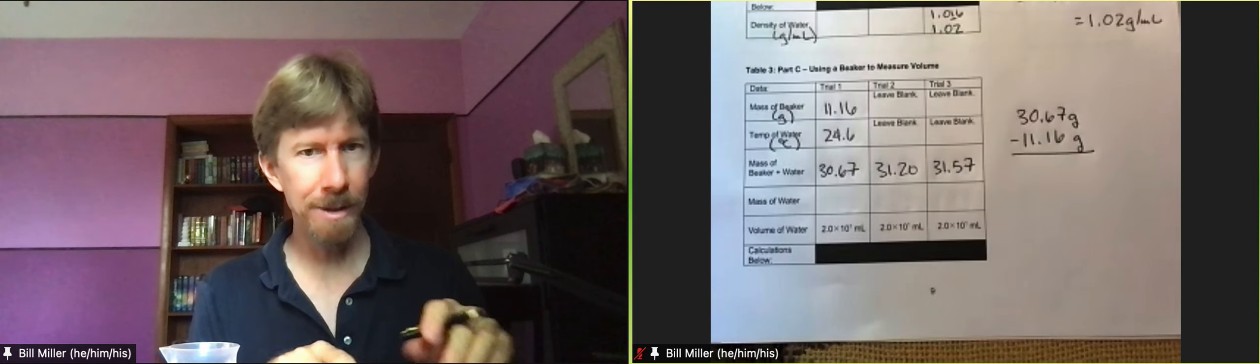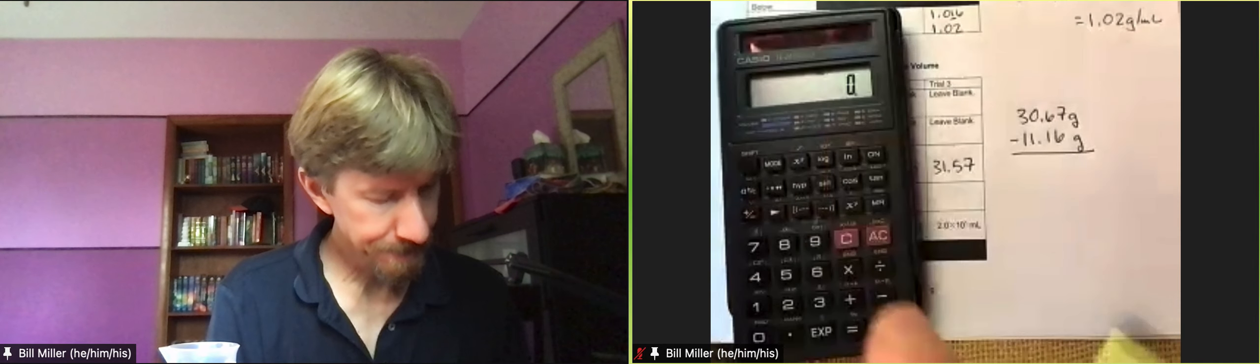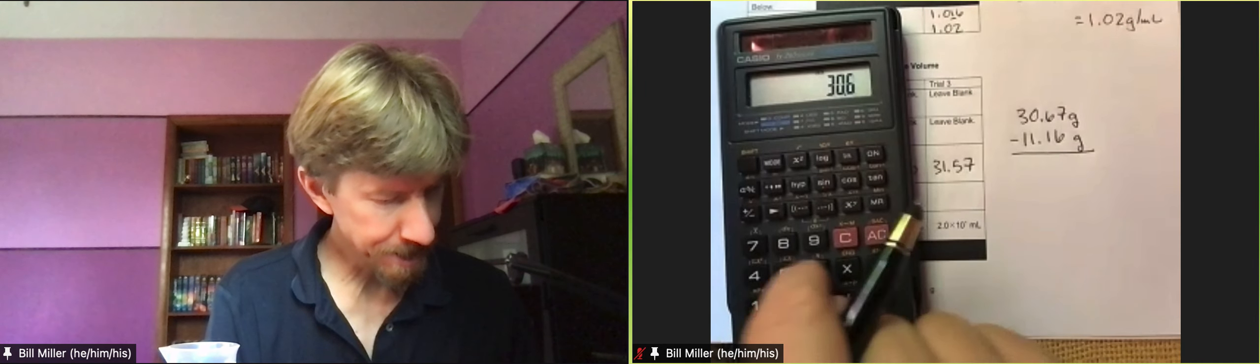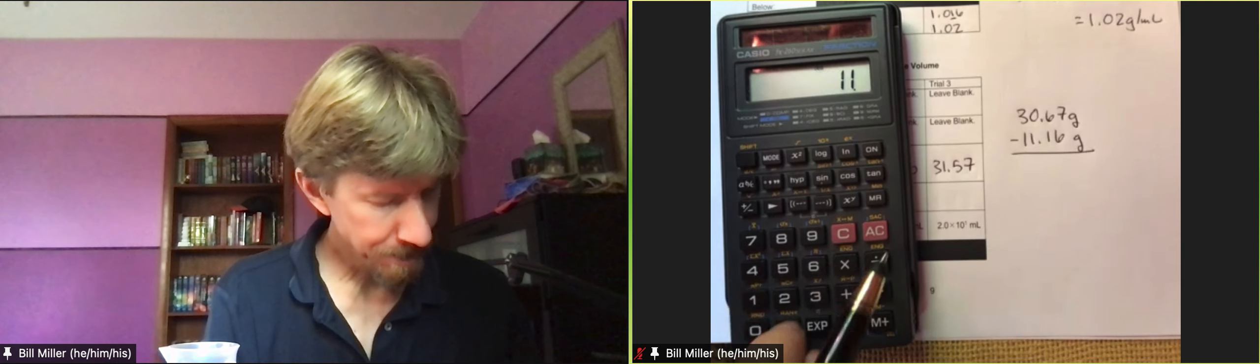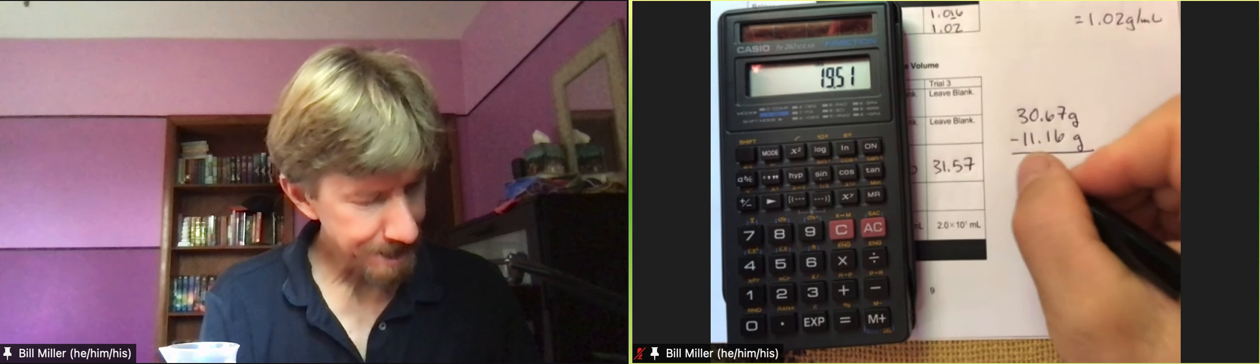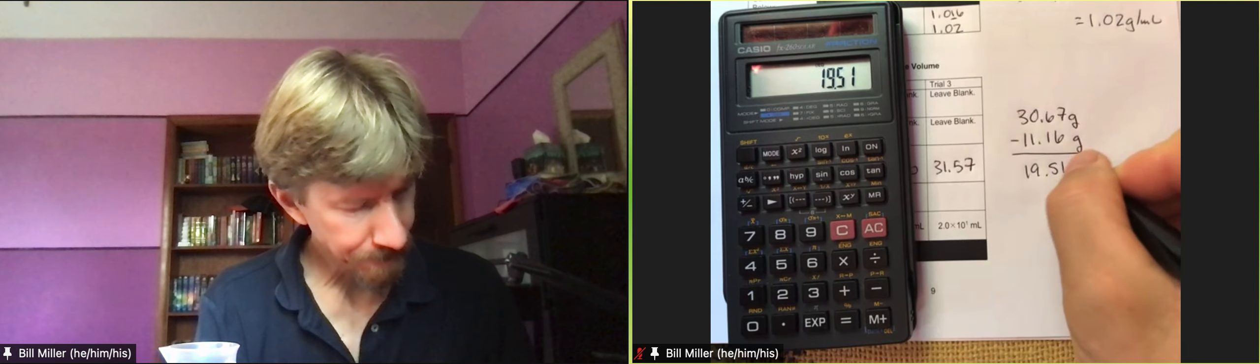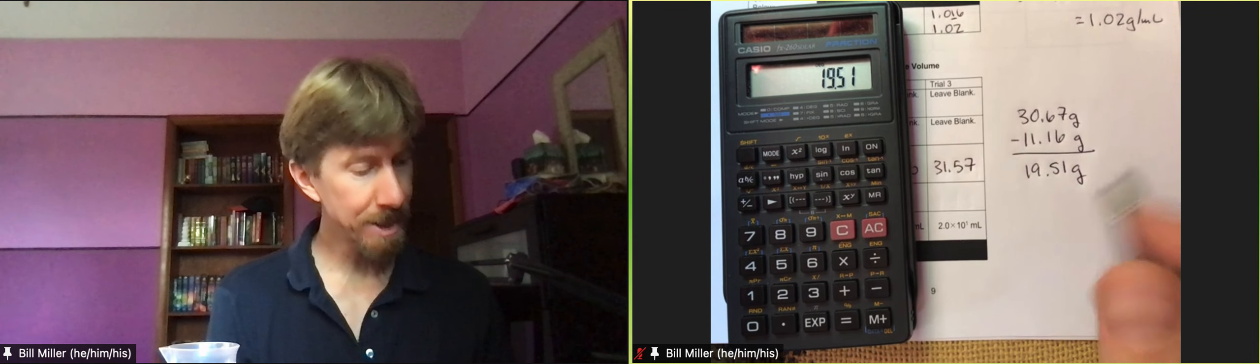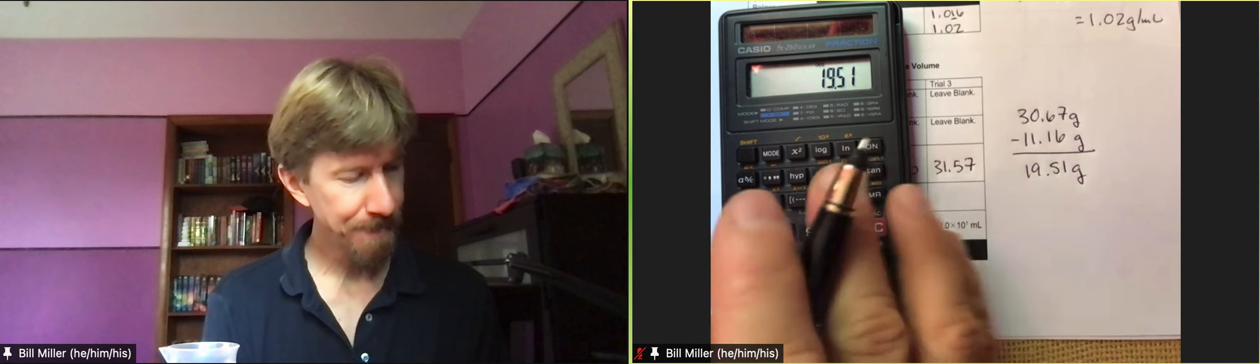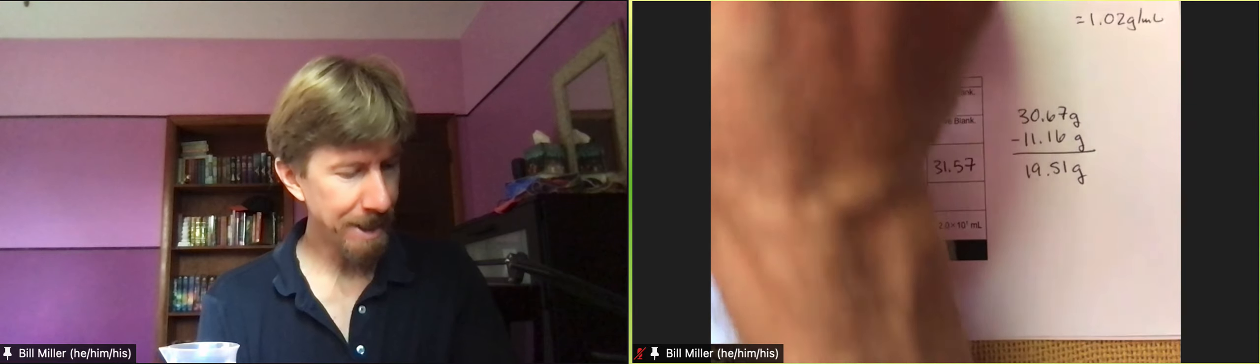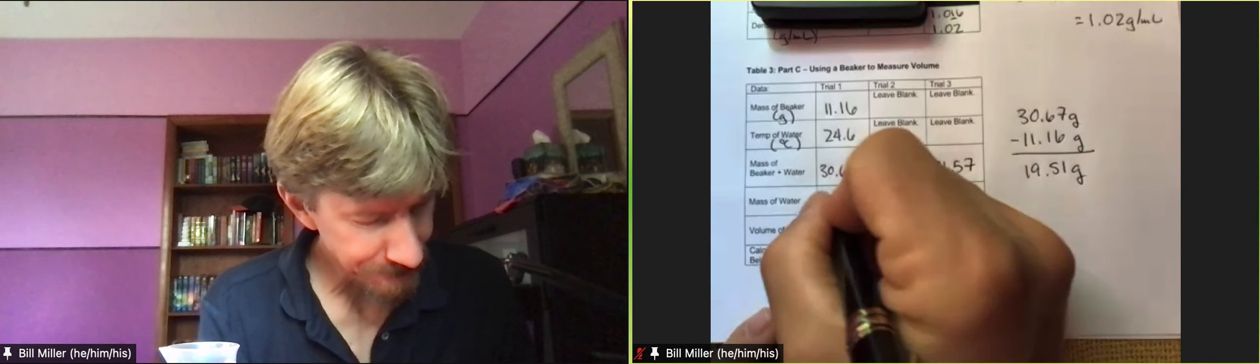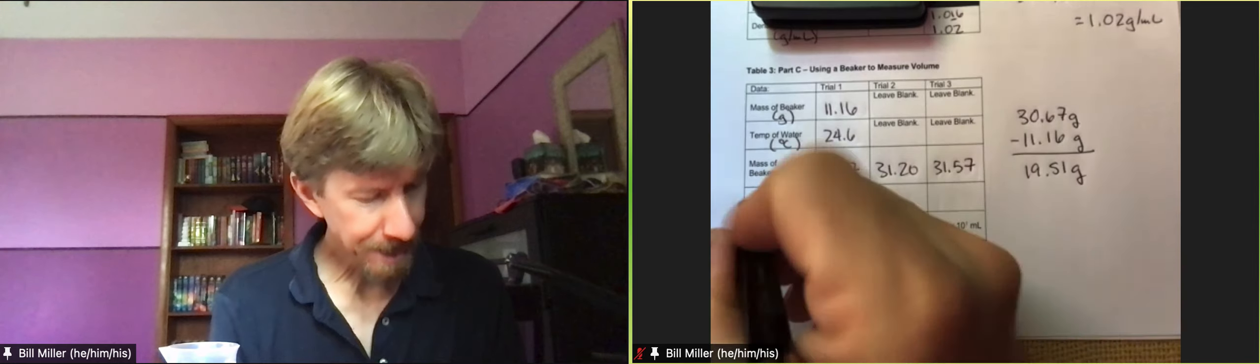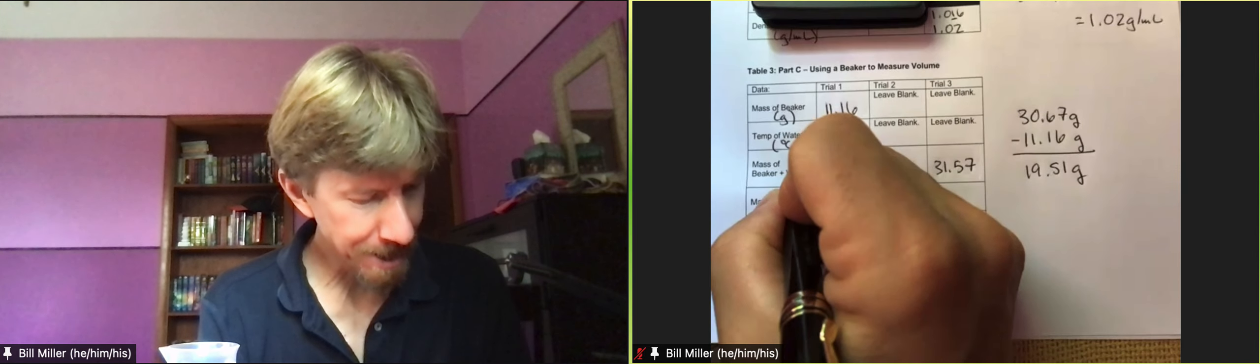Do the work on your calculator. 11.67. I get 19.51, which is 4 sig figs. Because that's true. And now my density. Let's write that down. That's grams. And that's grams.